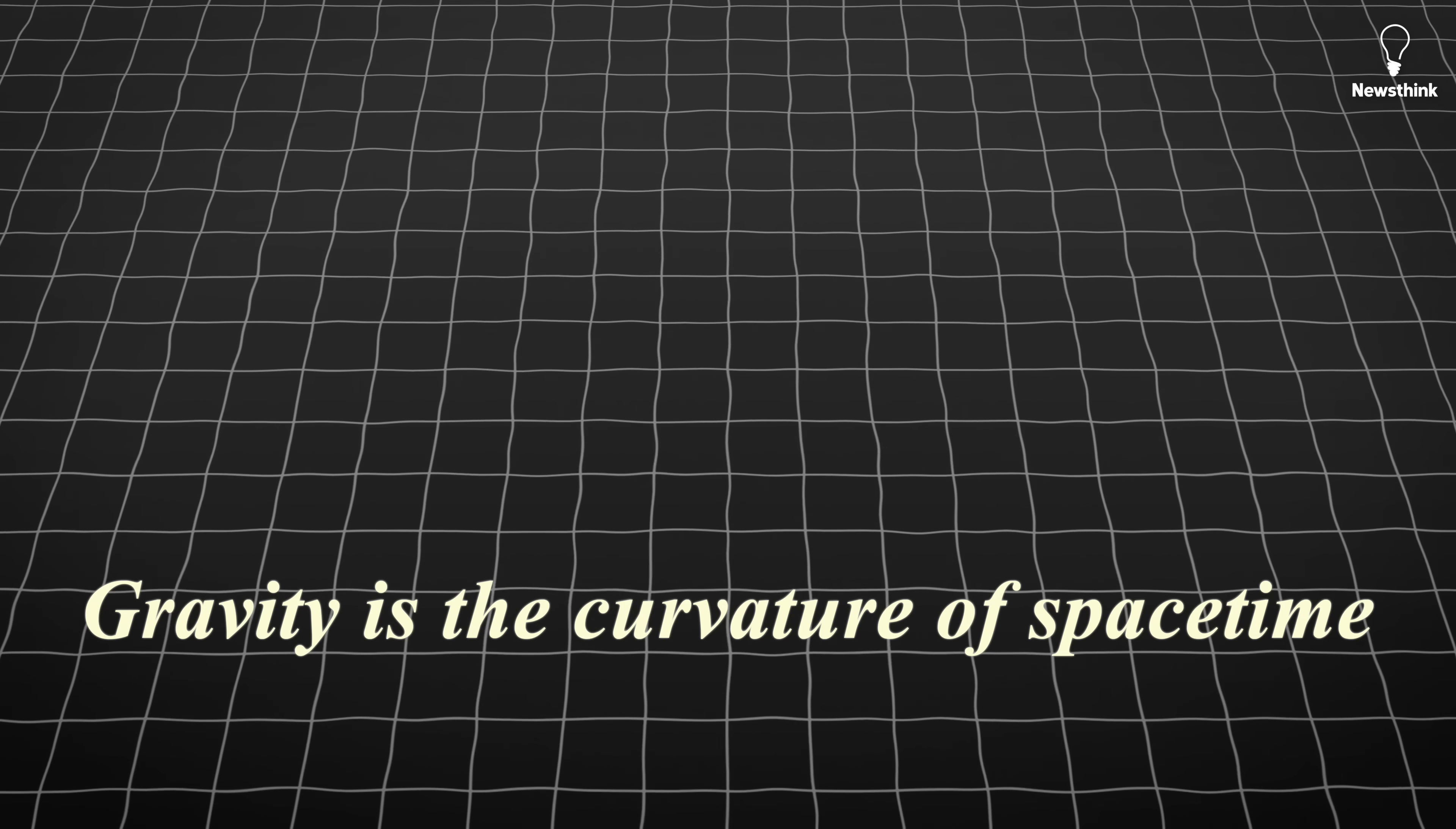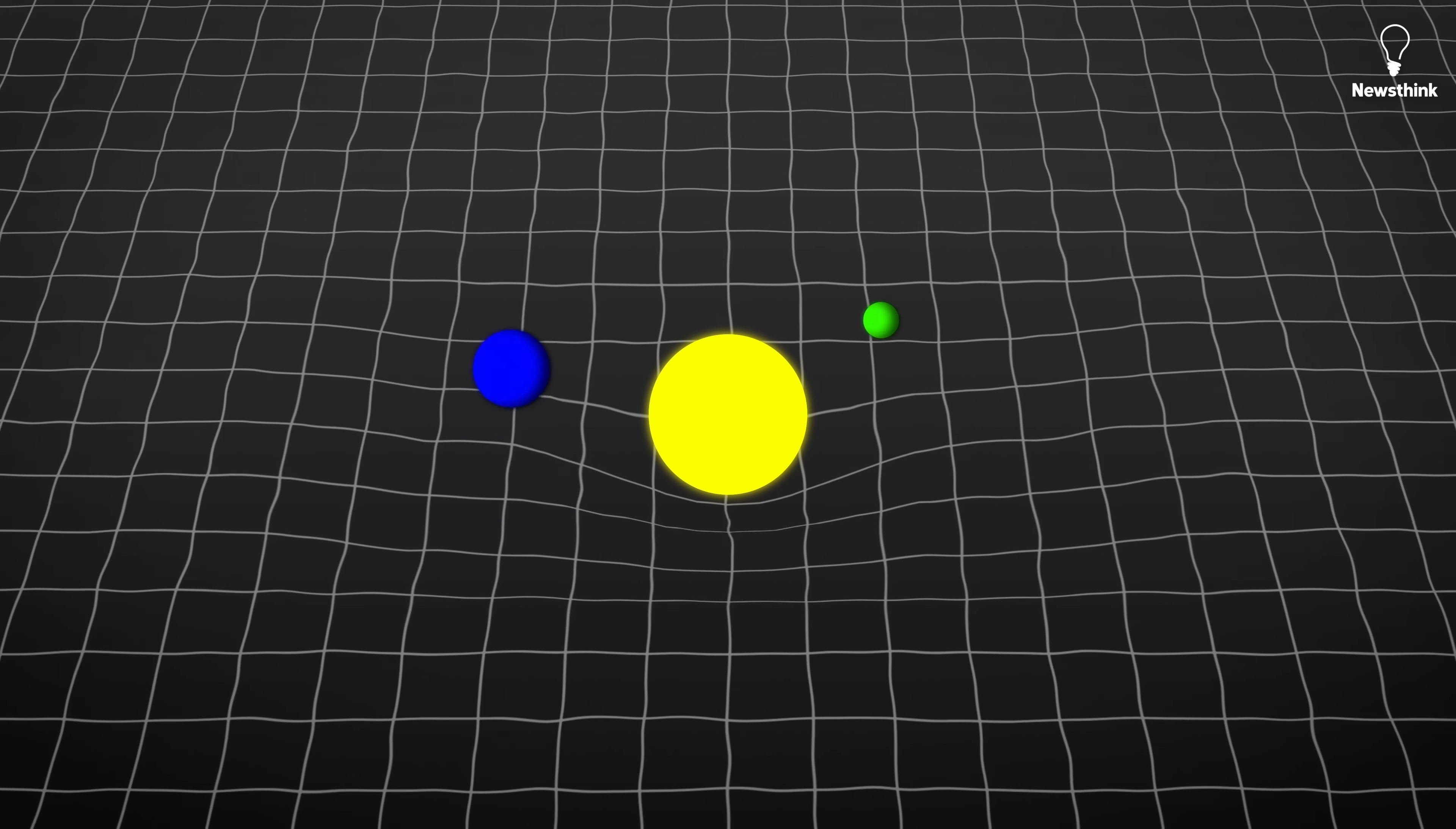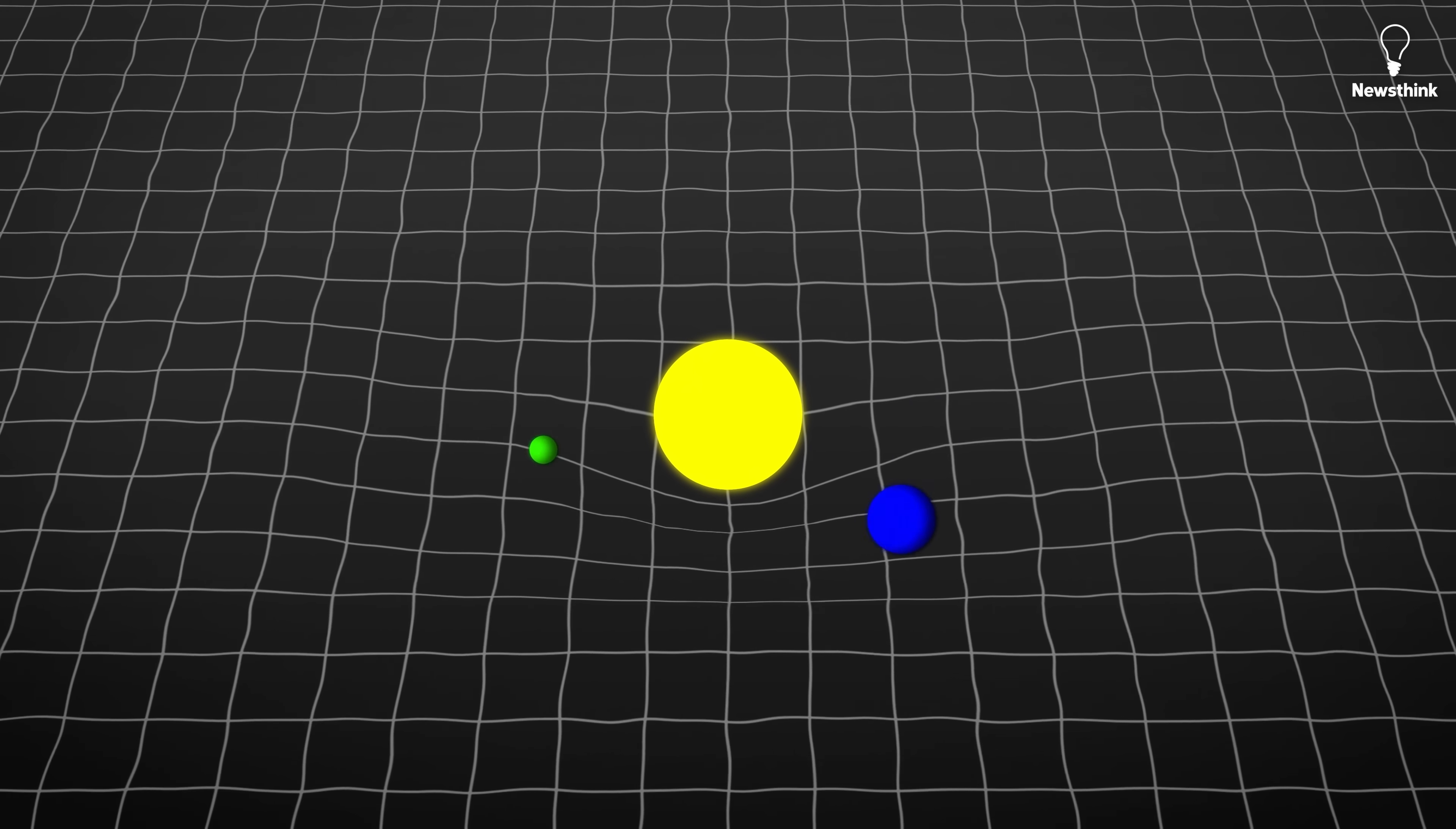General Relativity revealed that gravity isn't a force, but the curvature of space-time. Planets orbit the sun not because they're pulled by an invisible force, but because they move along the warped path of space-time created by the sun's mass.